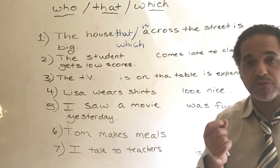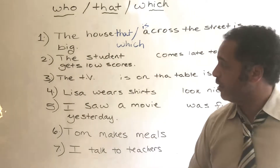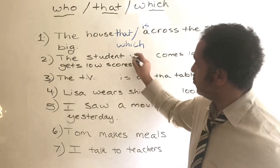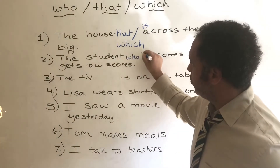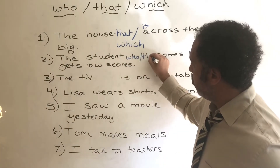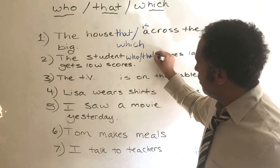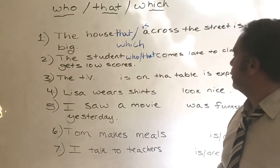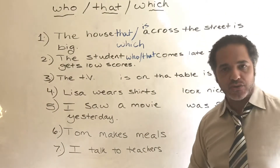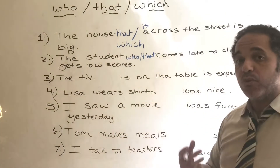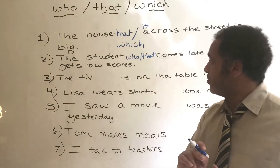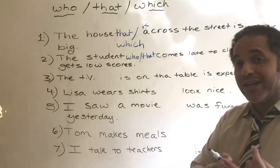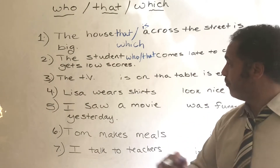For people we can say 'the student who comes late to class gets low scores.' For people, we can say 'that' or 'who.'